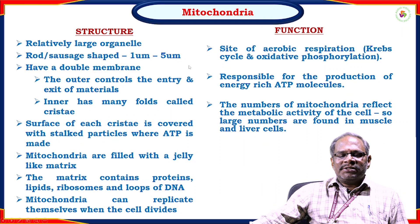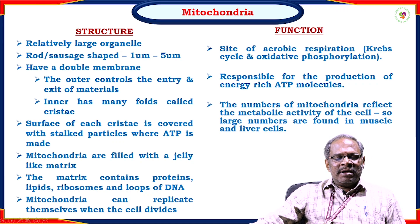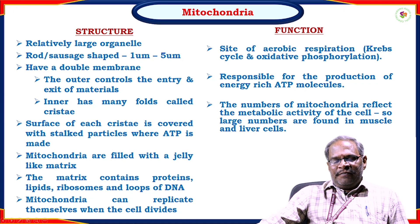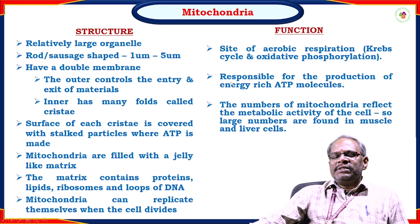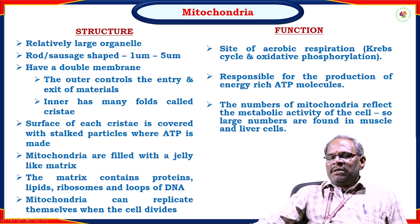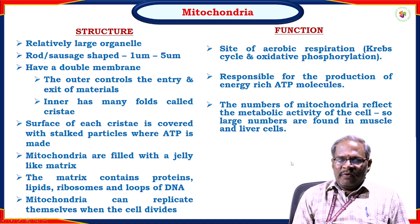Mitochondria are sausage-shaped, one to five micrometers in size, with a double membrane. The outer membrane controls entry and exit of material. The inner membrane has many folds called cristae, covered with stacked particles where ATP is made. Mitochondria are filled with a jelly-like matrix containing proteins, lipids, ribosomes, and loops of DNA. Mitochondria can replicate when the cell divides. Major functions: site of aerobic respiration, the Krebs cycle, and oxidative phosphorylation; responsible for production of energy-rich ATP molecules. Large numbers are found in muscle and liver cells — that is why it is called the powerhouse of the cell.